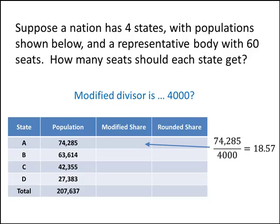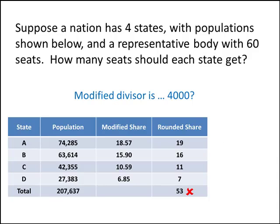We'll get our modified share by taking the population of each state — starting with A — and dividing by that new divisor. That gives us 18.57, and then the rounded share for A will be that number rounded up. We do the same thing for B, C, and D, dividing each state's population by the new divisor and rounding the answer up. But now we only have 53 seats. So we started with too many seats, made our divisor larger, and now it's too low — down to 53 when we want 60. That tells us we made the divisor too large; 4000 is too big.